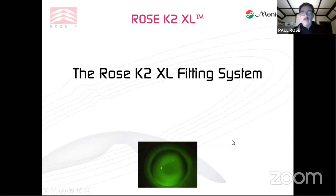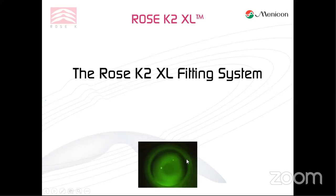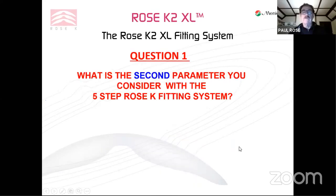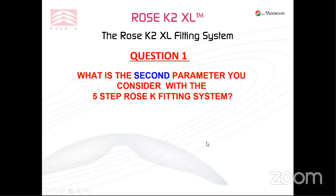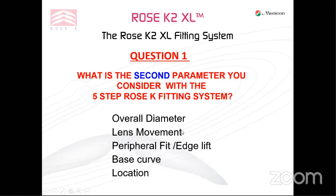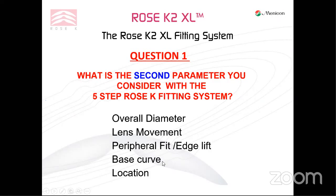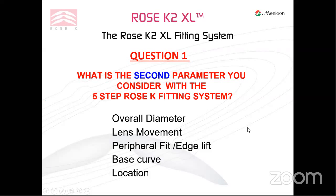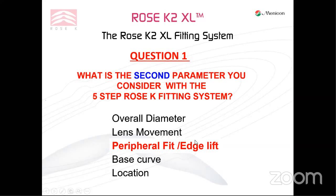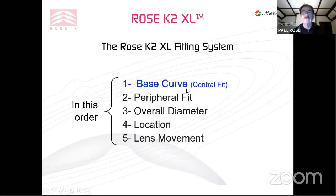I want to quickly go through how to fit my Excel design — this is a speed lecture, just so you understand my five-step fitting system. I'm going to pose about five questions. The first question: for those that know my fitting system, what is the second parameter you should consider with my five-step Rose K fitting system? The five steps are: diameter, movement, edge lift value or peripheral fit, base curve, and location. The first parameter we always consider is the base curve — what's the second? The answer is the peripheral fit. The order is: base curve, peripheral fit, diameter, location, and finally lens movement. Even with Excel, I do talk about lens movement; I'd like to see some movement.